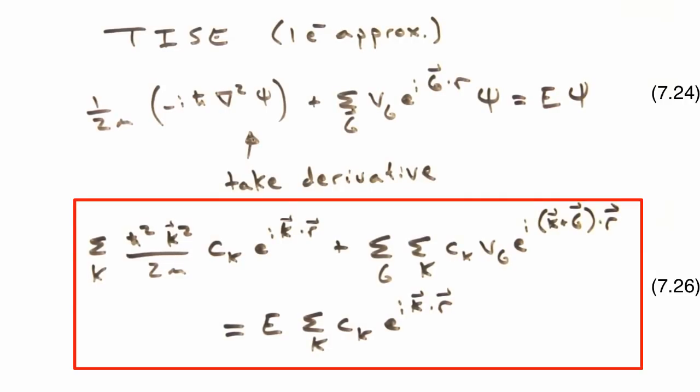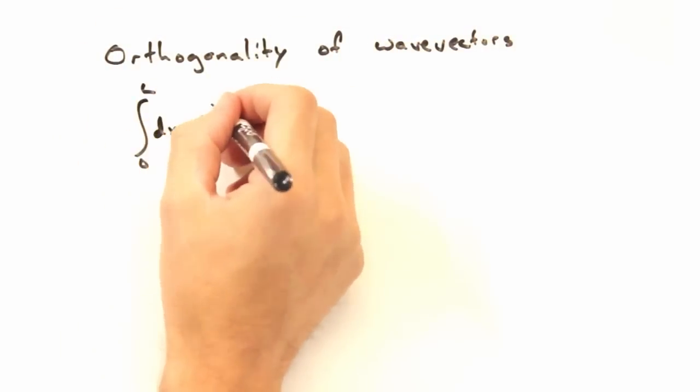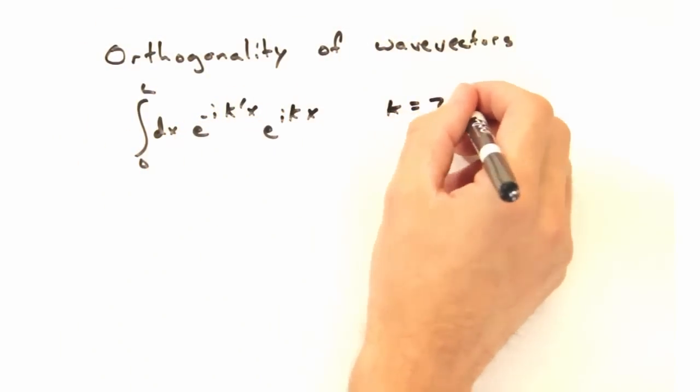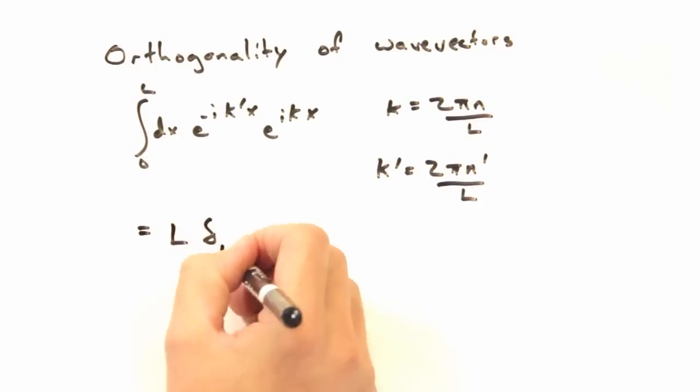Luckily, we can take advantage of the orthogonality of our wave vectors. As an example, here's the integral of e to the i k prime x times e to the i kx, where k and k prime are different wave vectors. Only for k prime equals k do you get a non-zero value for this integral.